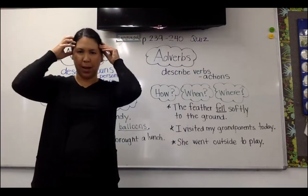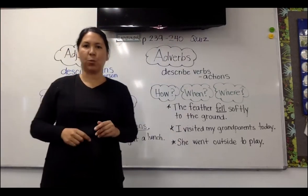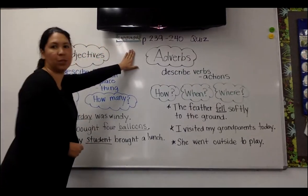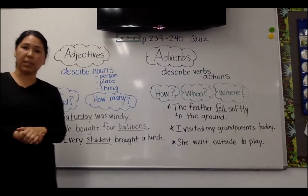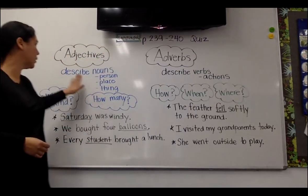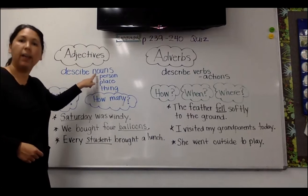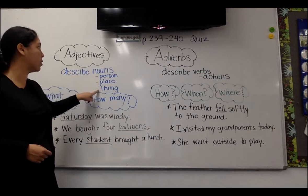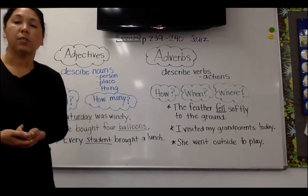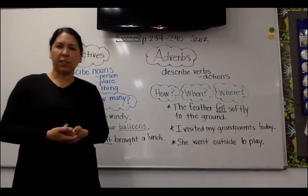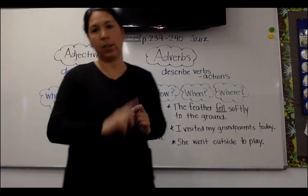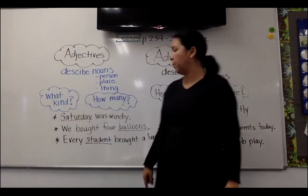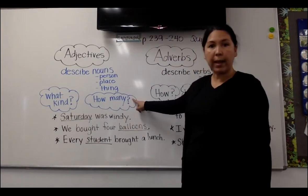So let's put our thinking caps on. We are going to review adjectives and adverbs. Adjectives are words that describe — what? That's right, they describe nouns. And remember, nouns are person, places, or things. So adjectives tell us two questions. Let's look in the blue little bubbles here. They tell us what kind and they tell us how many.